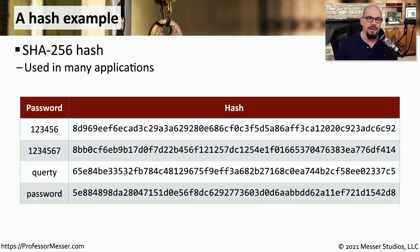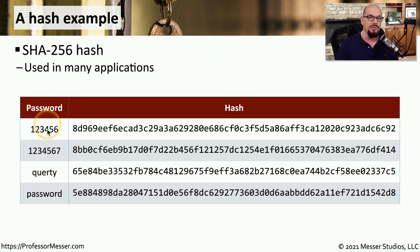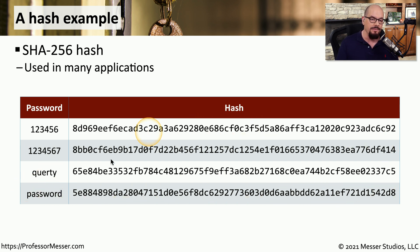Here's an example of some hashes based on some passwords — this is a SHA-256 hash, a 256-bit hash value. We take the original password, for example 123456 — not a great password — and the hash stored in our database is this very long 256-bit value. That value has no representation to the password 123456. During the login process, the password you enter is also hashed and compared to the stored hash value. You can see that the hash for 1234567 is very different than the hash for 123456, and the hashes for QWERTY and password are also very different values.